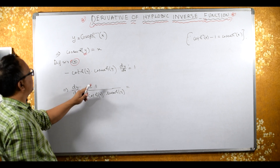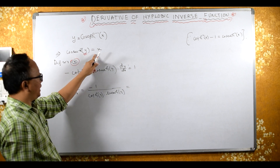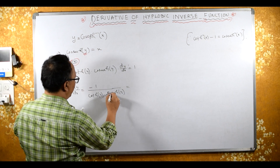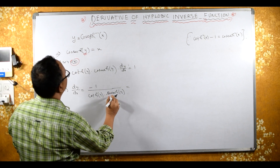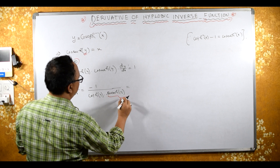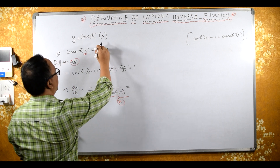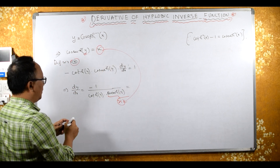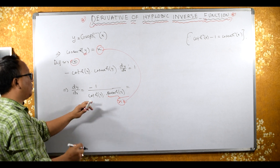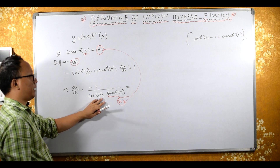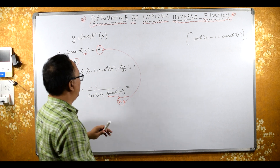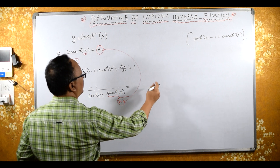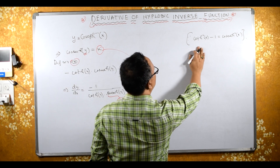Now, cosec hyperbolic y is equal to x, because from our original equation cosec hyperbolic y = x. But we still need to find cot hyperbolic y.